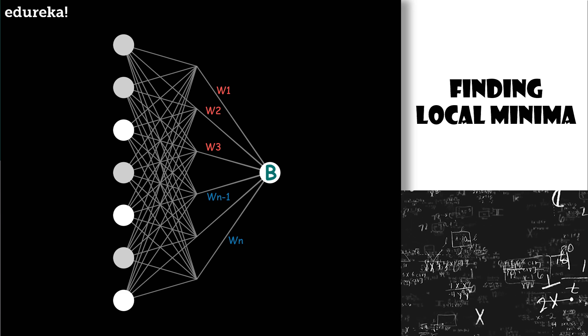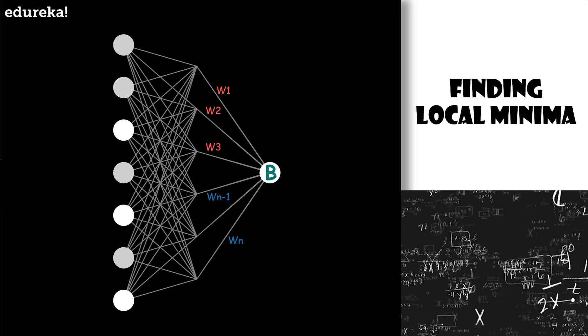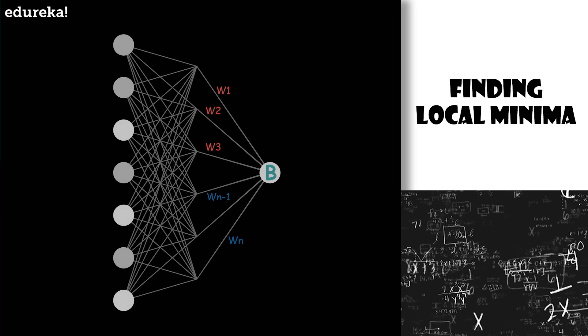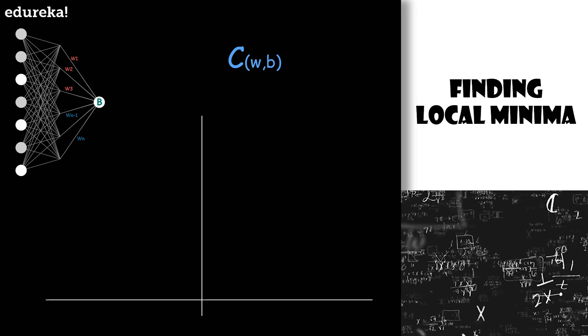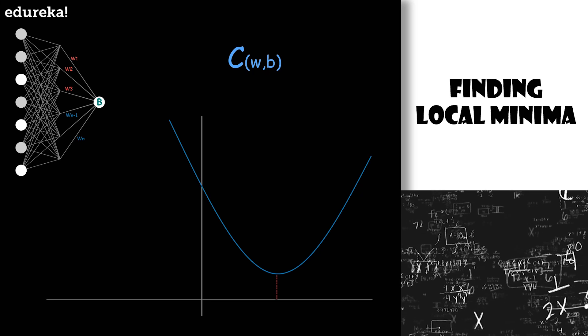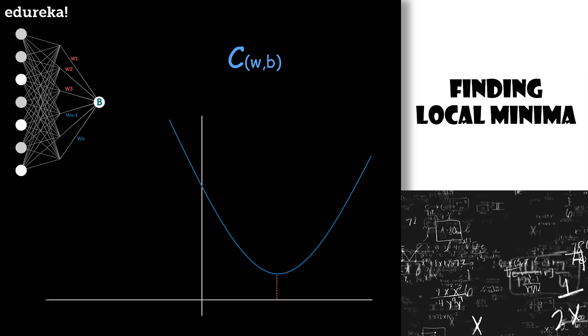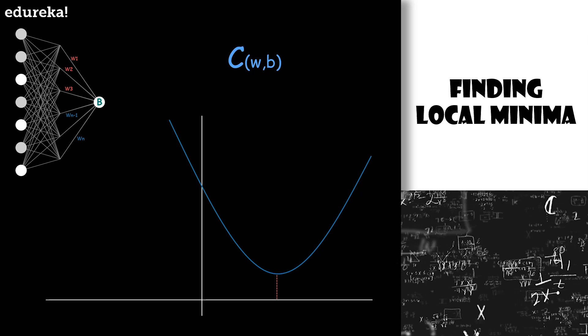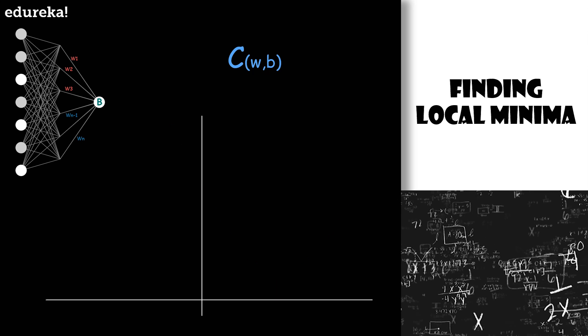For now we're going to imagine that we have been simply given a function of many variables and what we want is to minimize that function. Those of you from the calculus background will know that you can sometimes figure out that minimum explicitly. A more flexible tactic is to start from any old input and figure out in which direction you should step to make the output low. Specifically, if you can figure out the slope of a function where you are, then if you're shifting towards left then the slope is positive, and if you're shifting to the right the slope can be negative.